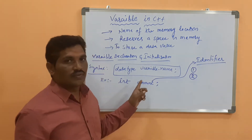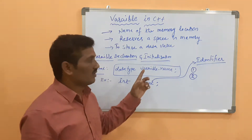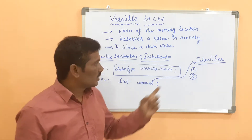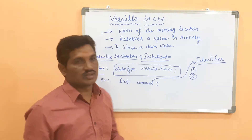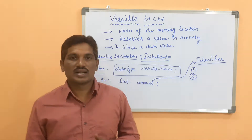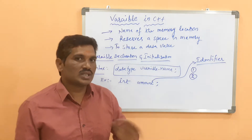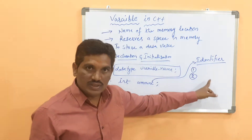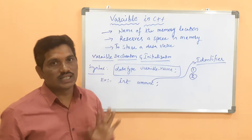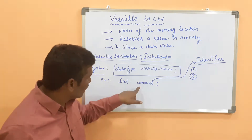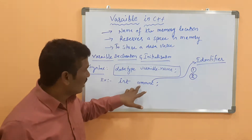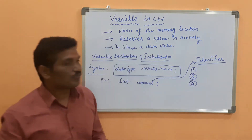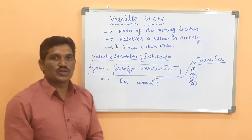The second rule is: the first letter of an identifier or first letter of a variable should not start with a digit. It must start with an alphabetic character or underscore. Generally we don't use the underscore as a first letter, but we can. The third rule is: keywords cannot be used as an identifier.